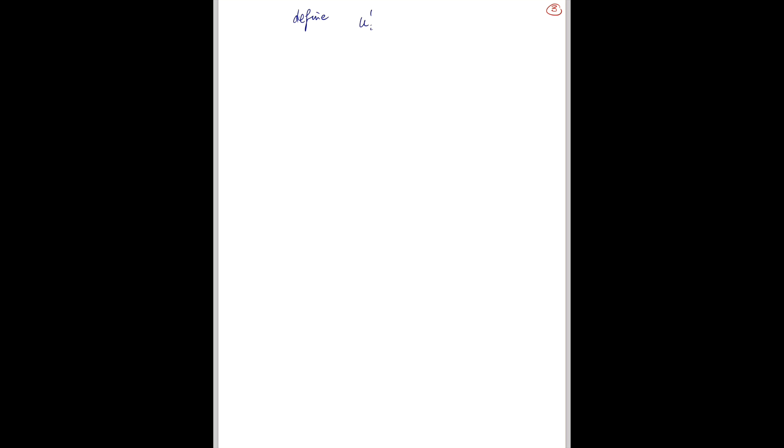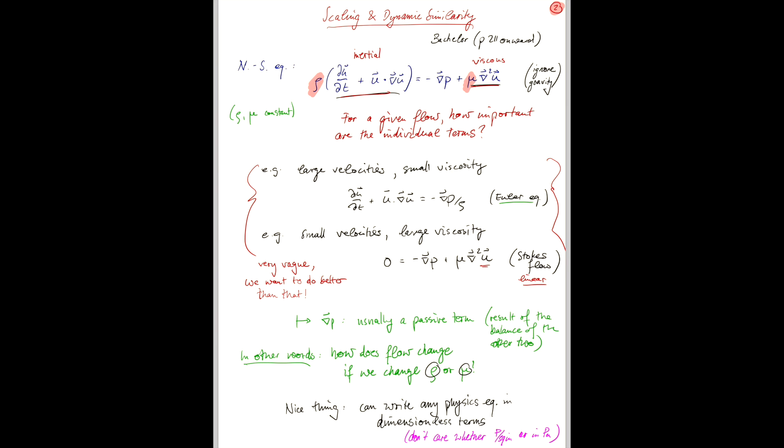So, we will define the following non-dimensional variables. ui dash, and I'm using index notation here for now, is ui divided by a velocity scale u. xi dash is divided by xi divided by some length l. So, then the unit of ui dash and xi dash is 1. And then, a little more complicated, to get a dimensionless time, we divide t by l over u. And then you will see the unit of t dash is seconds, t, divided by meters, l, divided by meters per second, which is also 1. So, now, let me just copy the equation over here.